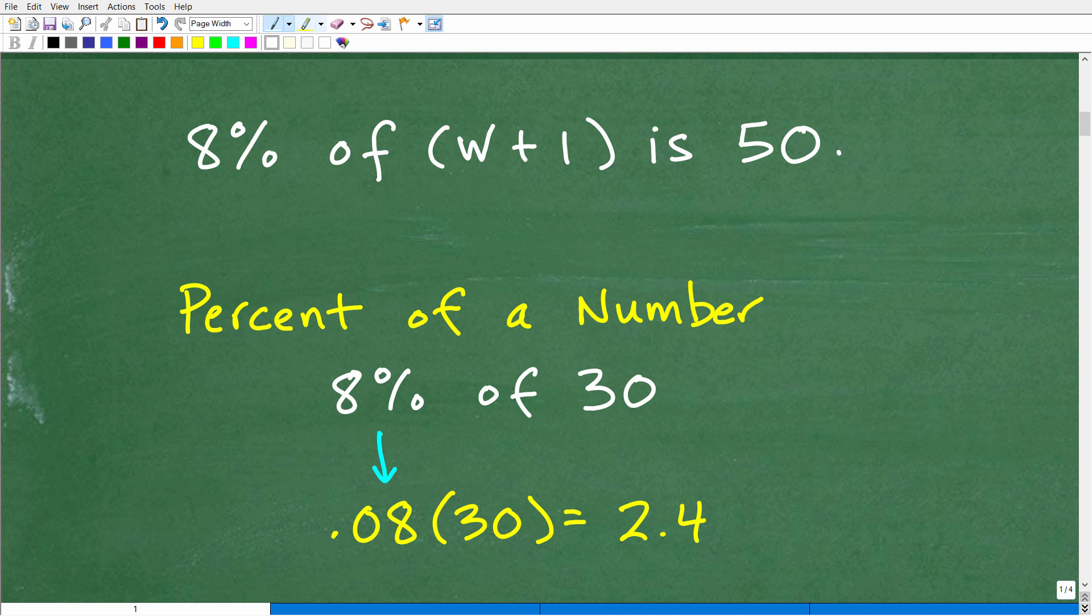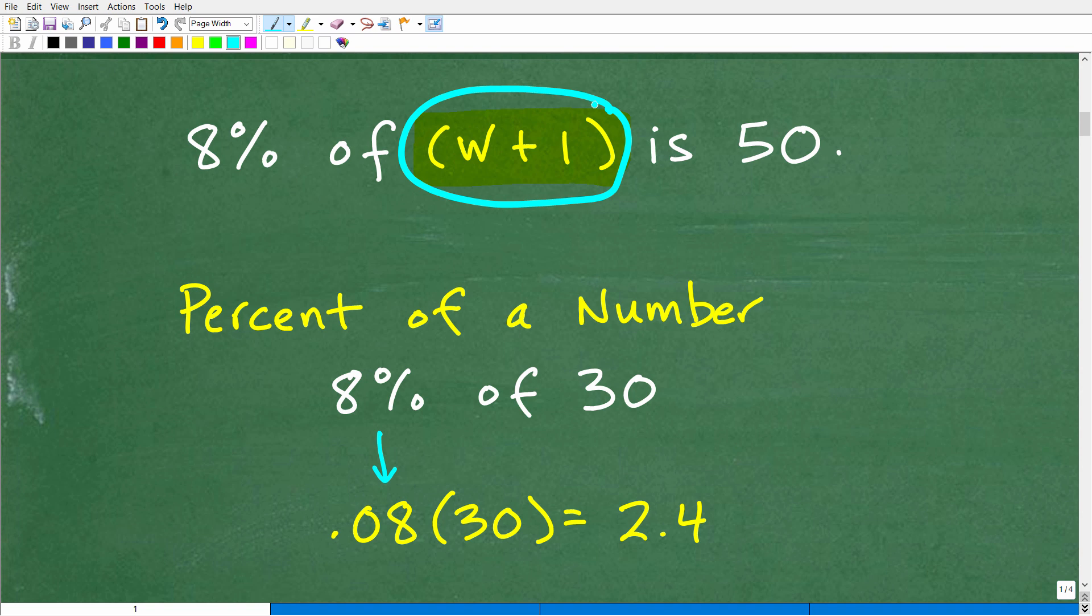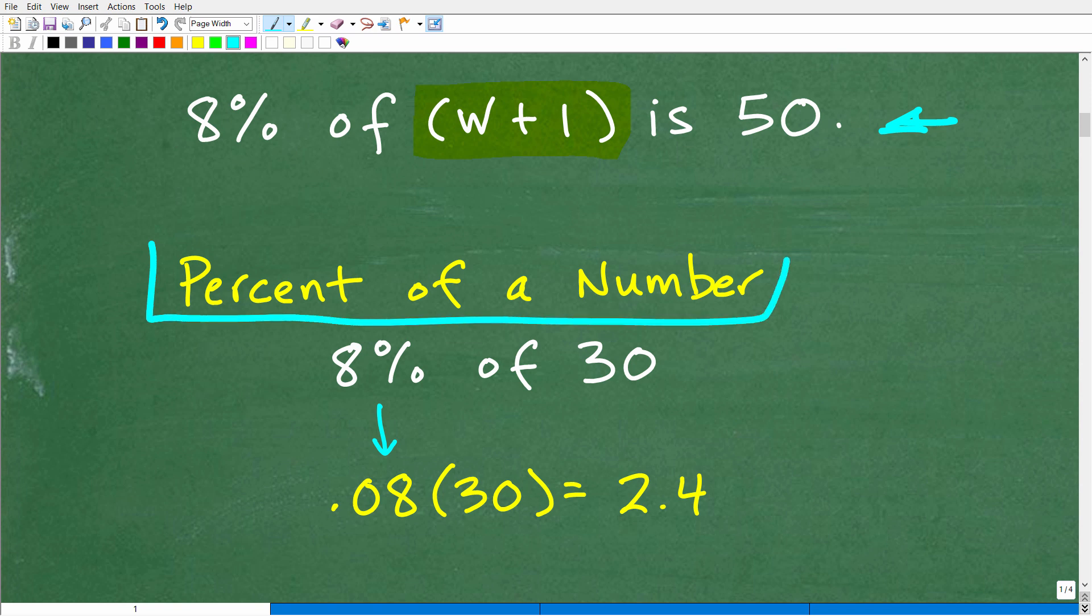Okay, so here is our problem. 8% of W plus 1 is 50. Now, again, W plus 1 is just an algebraic expression that represents a number. Remember, in algebra, when you see a variable W, X, Y, it doesn't make a difference. These just represent numbers. Now, before we do this problem, let's just review how to do a basic percent problem, because understanding how to do a basic percent problem is key to figuring out how to do this problem.